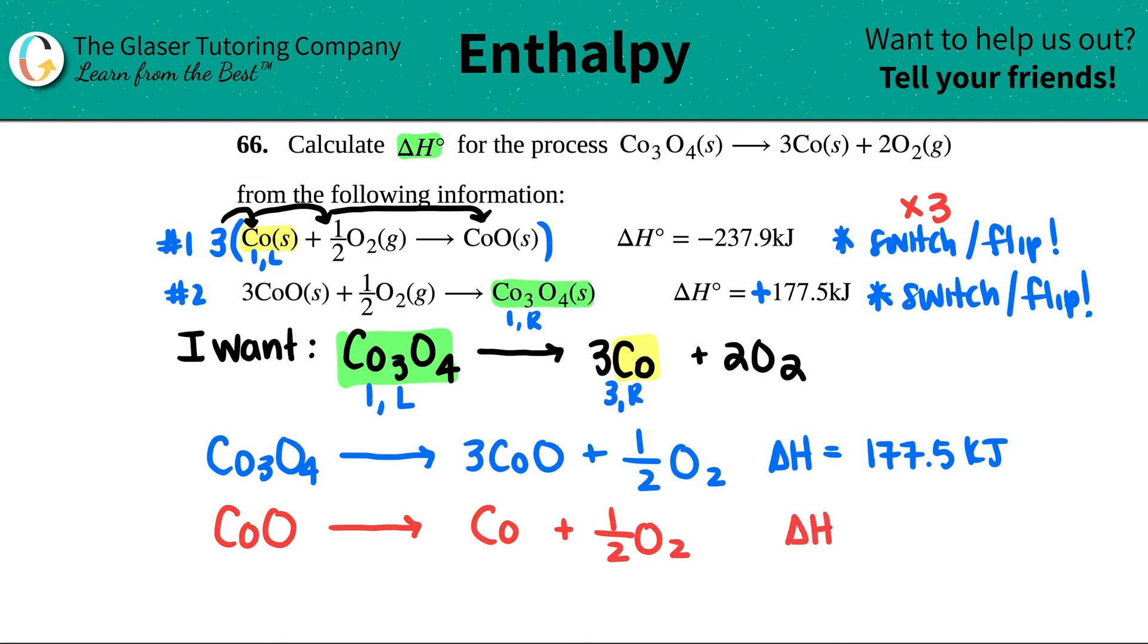So let's do the switching first. So it's going to be CoO yields, left to right, Co plus 1/2 O2. Right? That was the switch. And maybe I'll just say that the delta H now, instead of it being negative, it's going to be a positive 237.9 kilojoules. So the first part is done.